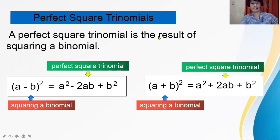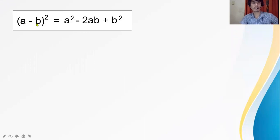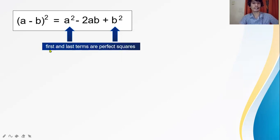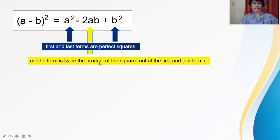A perfect squared trinomial is the result of squaring a binomial. For (a minus b) squared equals a squared minus 2ab plus b squared — look at the first and last term. The first and last terms are perfect squares. And look at the middle term: the middle term is twice the product of the square root of the first and last term.